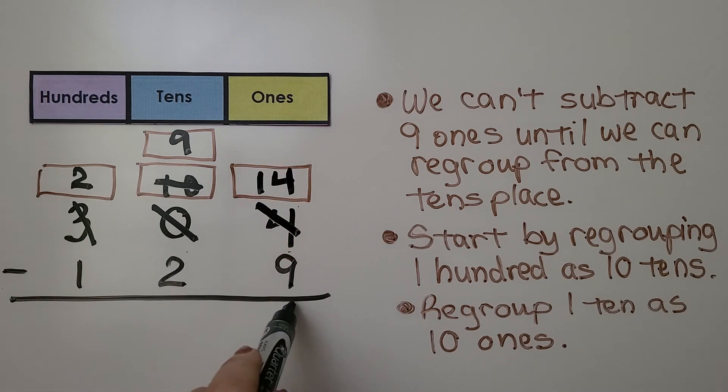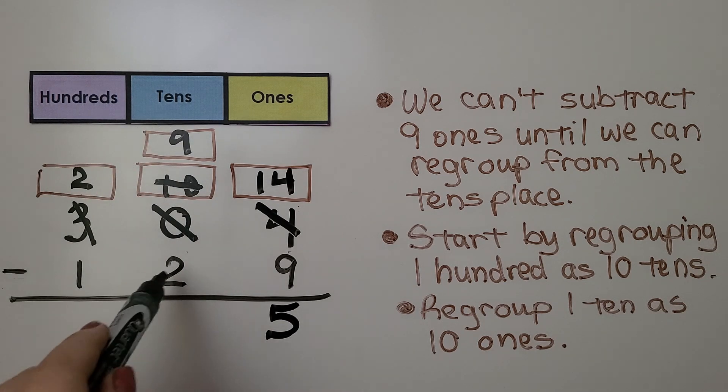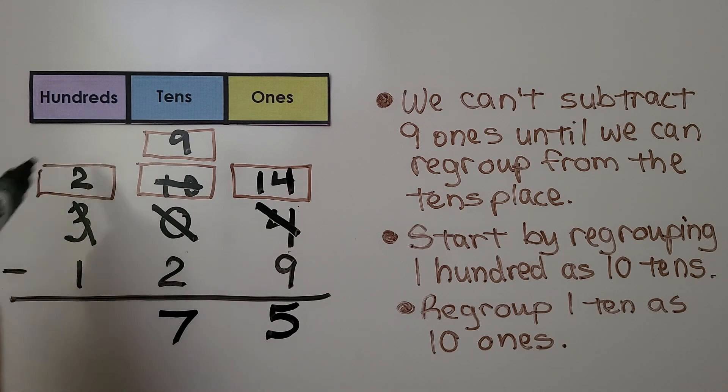Fourteen minus nine is equal to five. We're way up here. Nine minus two is seven tens. Two hundreds minus one hundred is one hundred. Our difference is one hundred seventy-five.